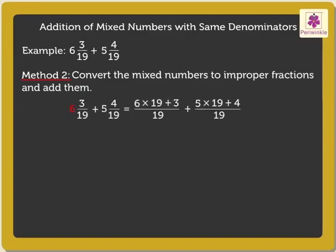Thus, 6 and 3/19 equals (6×19+3)/19, and 5 and 4/19 equals (5×19+4)/19.